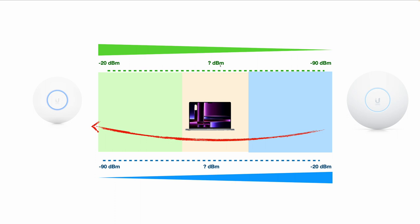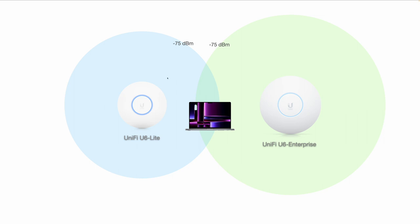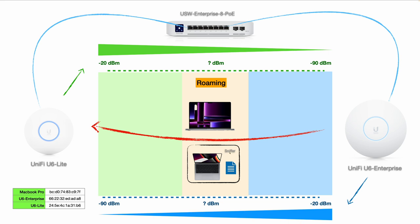I want to know whether the trigger threshold is really minus 75 dBm. I show two circles in different colors for the two access points, both representing the minus 75 dBm signal strength, with an overlapping area to represent a typical Wi-Fi environment. I also noted down the MAC addresses for the two access points and the Mac machine so we can easily identify source and destination in captured Wi-Fi frames.